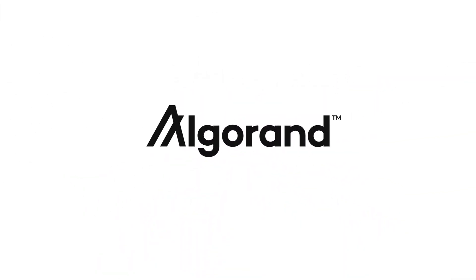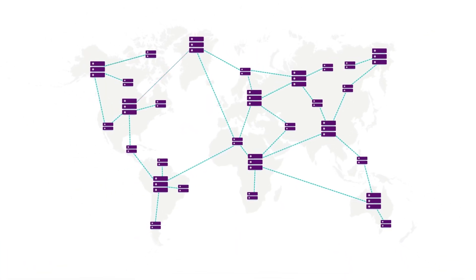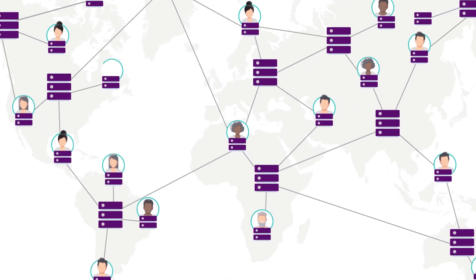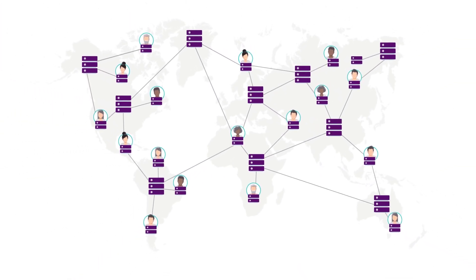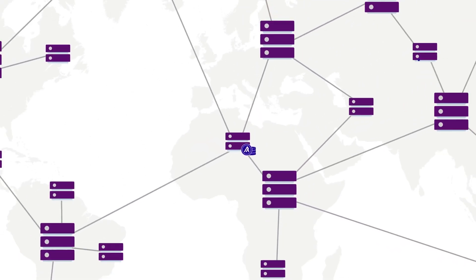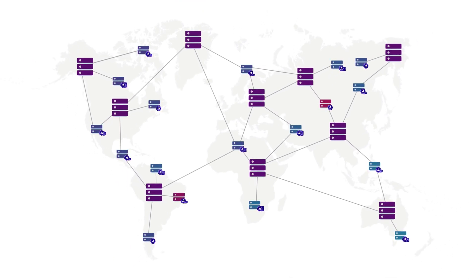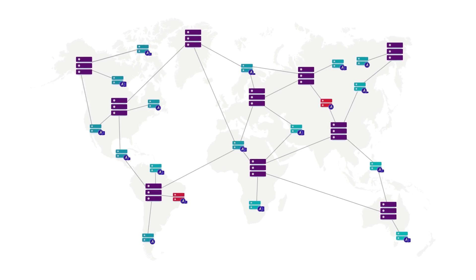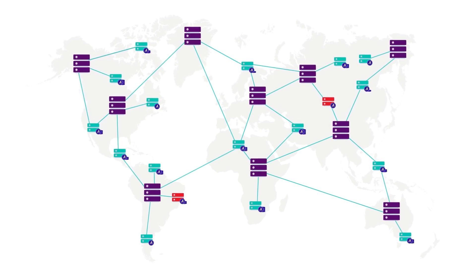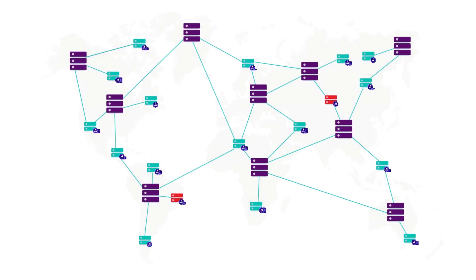Algorand securely and efficiently achieves consensus in a fully decentralized network, as long as the supermajority of honest users agree on what should be added to the chain. Users participate in consensus through participation nodes, and nodes submit users' votes to the network. Algorand ties the security of the whole economy to the honesty of the majority of the economy, unlike other protocols which tie it to a small subset — such as miners or delegates. It's impossible for the owners of a small fraction of the stake to harm the whole system, and it would be foolish for the owners of the majority of the stake to misbehave, as it would diminish the network overall.